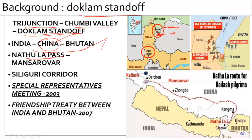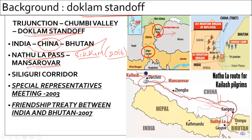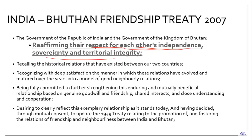Nathula Pass is in Sikkim. In the year 2016, this Nathula Pass was opened for Mansarovar pilgrimage, through which people used to go to Mansarovar via Tibet. The Chinese government deployed troops for security reasons and started constructing a road there. Bhutan started resisting the road construction, and in response the Chinese deployed their troops. Bhutan, being a small nation, wanted help, so they turned towards India. The Indian government had signed a friendship treaty with Bhutan in 2007, under which both nations agreed to respect each other's independence, sovereignty, and territorial integrity.